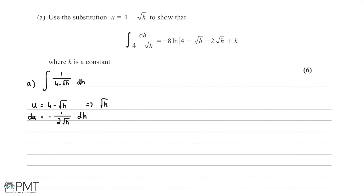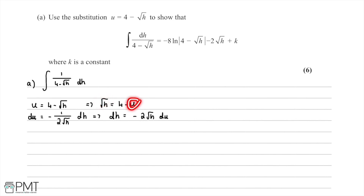We can also rearrange the substitution to get √h = 4 - u. Now we want to rearrange for dh, so we can say dh = -2√h du. We also know what √h is in terms of u, so we can rewrite dh entirely in terms of u.